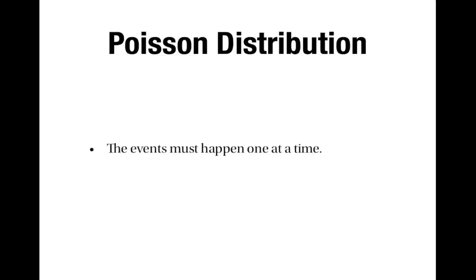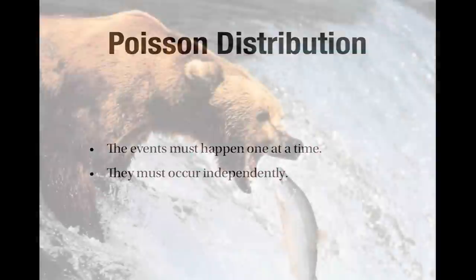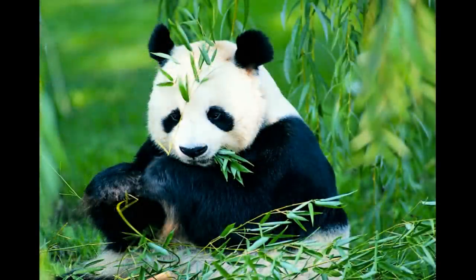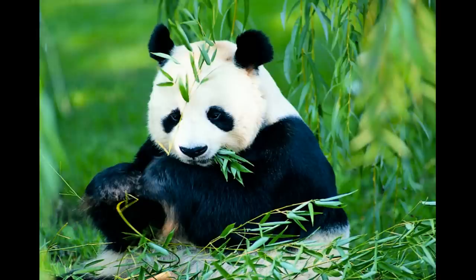There are some things to bear in mind when using the Poisson distribution. One is that events must happen one at a time, and the other is that they must occur independently. When the bear goes fishing we assume he only catches one fish at a time, and that catching a fish doesn't increase or decrease the probability of catching another. Likewise with pandas, we assume they live alone so you only find one at a time, and that having a panda doesn't increase or decrease the probability of having another nearby — something that probably isn't true because pandas are territorial.